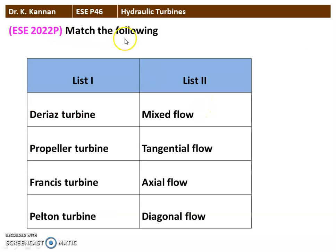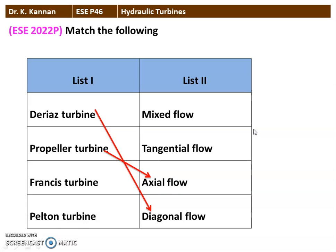The next question is a match-the-following from the 2022 question paper. The Deriaz turbine is a diagonal flow type of turbine. The propeller turbine, i.e., the Kaplan turbine, is an axial flow type of turbine. The Francis turbine is a mixed flow type of turbine — axial entry, radial discharge. The Pelton turbine is a tangential flow type of turbine, where the flow is tangential to the wheel. These are the correct matching options.